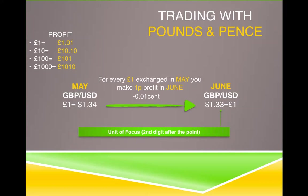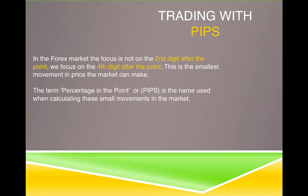In Forex, the focus is not on the second digit after the decimal point — we focus on the fourth digit after the point. This is the smallest movement in price the market can make. The term is 'percentage in the point,' and you're going to hear many people talking about pips — catching pips here, catching pips there. This is what we're talking about. It's the name used when calculating these small movements in the market — it's actually the smallest movement the market can make.